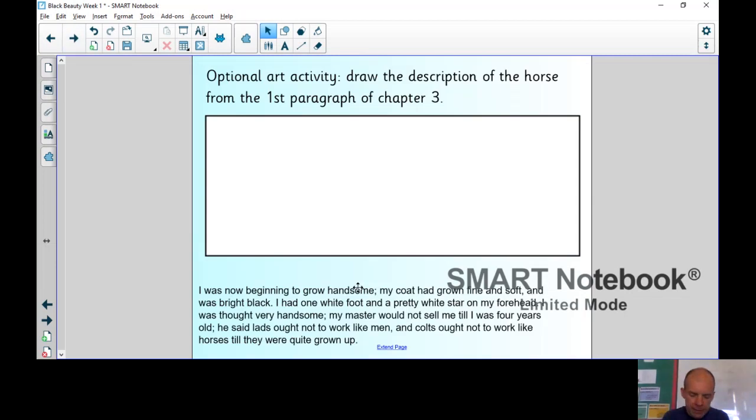Finally, an art one for today. There's more excellent description from Anna Saul in this, particularly in the first paragraph when she describes what the horse looks like. She's very handsome. So it would be a great time to get a pencil, get a piece of paper and try and sketch the horse, Darkie, that's been described in the first paragraph of chapter three. The description is there for you. Okay, I'm going to stop the video now. Looking forward to seeing some of your work and answering all of your questions. Have a good day. Take care. Bye.